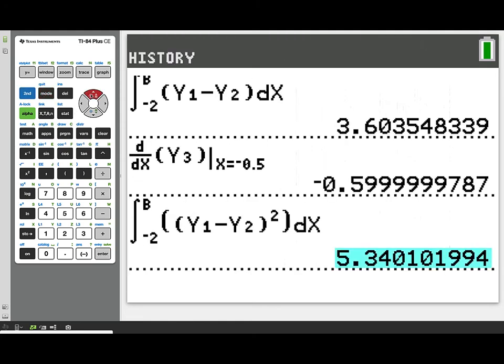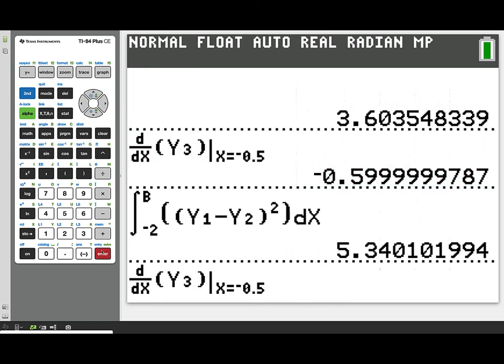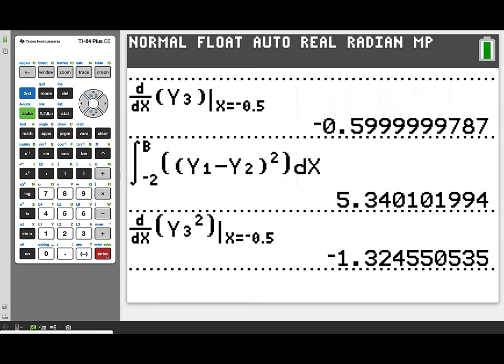Finally, for part d of this problem, we're told that the vertical line moving across the region is moving at the rate of 7 units per second. We're asked how fast is the cross-sectional area changing with respect to time. What we're going to do is find the derivative of the cross-sectional area with respect to x and then use the chain rule.